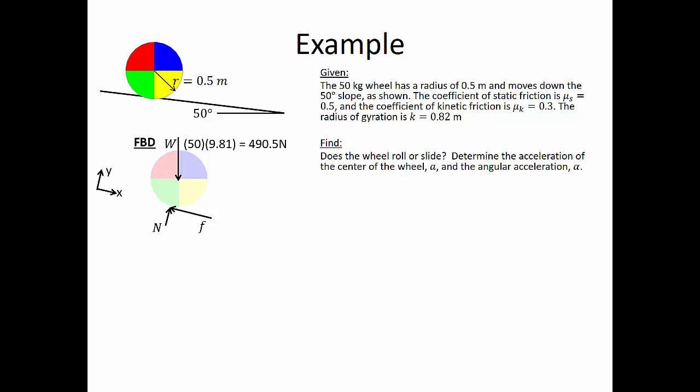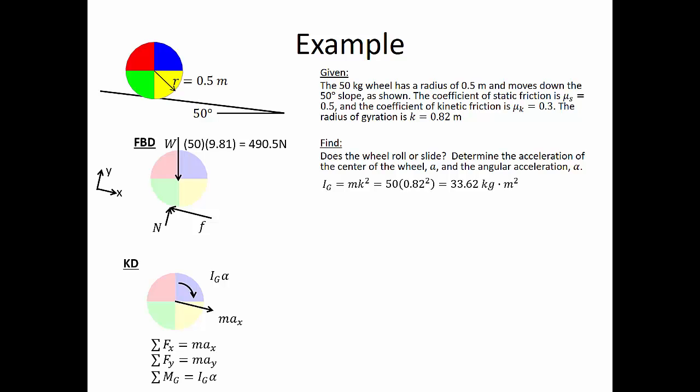From our steps, the first thing we need to do is draw a free body diagram. Here we have a weight of 490.5 newtons, a normal force, and a friction force acting at the base of the wheel. We also draw the kinetic diagram showing the mass moment of inertia times the angular acceleration, and mass times the acceleration in the x direction for our center of gravity. Note that we've rotated our axes in order to solve this problem. We need to first calculate our mass moment of inertia. Since we have a radius of gyration, our mass moment of inertia equals mass times the radius of gyration squared, or 50 kilograms times 0.82 squared, which equals 33.62 kilograms meters squared.